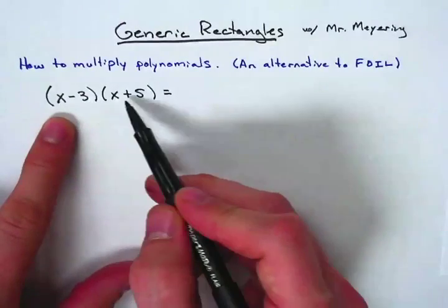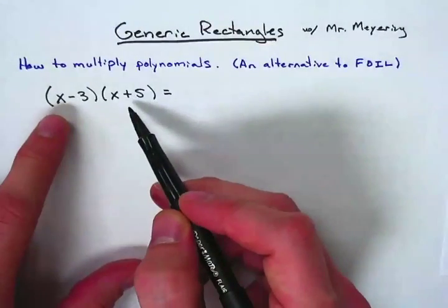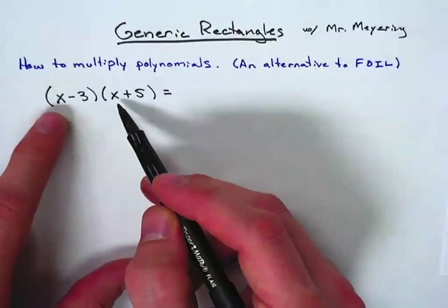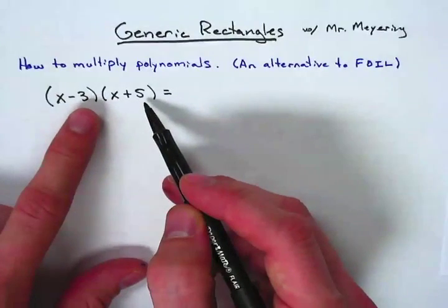This is a binomial, this is another binomial, and when we multiply them, what we've always done is probably FOIL, which would be take the first, your outer terms and multiply, your inner terms, and your last terms and multiply.